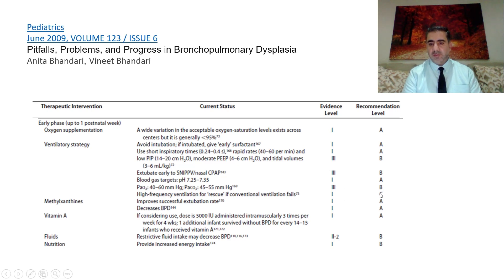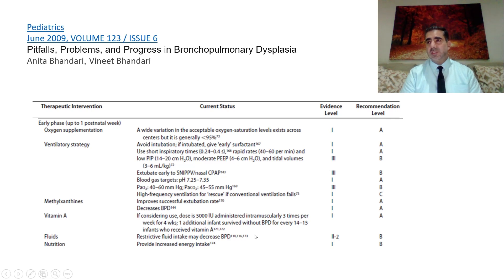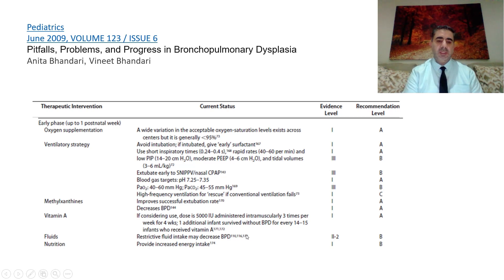High-frequency ventilation as rescue when conventional ventilation fails has evidence level 1 but grade of recommendation C. Methylxanthines — aminophylline, theophylline, and caffeine — improve successful extubation rate and are associated with decreased BPD. Vitamin A, if used, is dosed at 5,000 international units intramuscularly three times per week for four weeks; one additional infant survived without BPD for every 14 to 15 infants treated (number needed to treat 14–15), though intramuscular administration limits clinical applicability. Fluid restriction may decrease BPD. Nutrition is very important — increased energy intake must be provided.